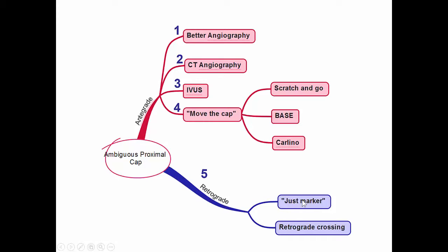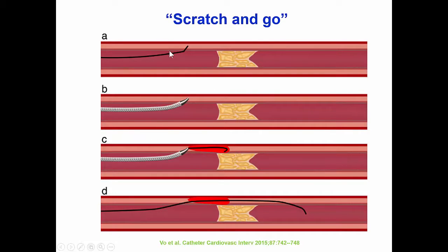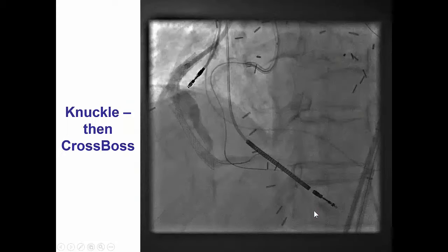Retrograde was not possible in this case, and CT angiography was not helpful — we did not have CT angiography, and there was no large enough branch to do intravascular ultrasound. This is how the scratch and go technique works: a wire is advanced into the adventitia proximal to the proximal cap, then a microcatheter is advanced close to the track created by the wire, a polymer-jacketed wire is advanced to create a knuckle, and then subintimal crossing of the CTO follows.